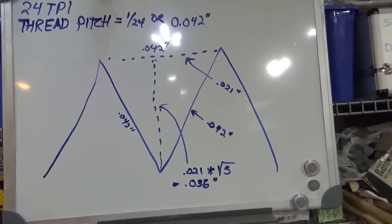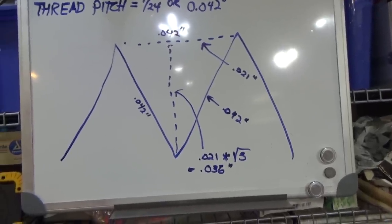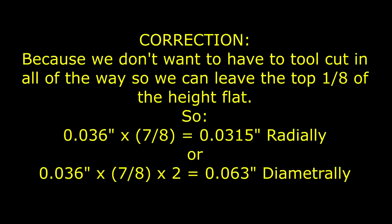To correct that last statement — we don't want to go all the way in to generate a full triangle; we want to stop leaving the top eighth flat. So we take that 0.036 height and multiply by 7/8, giving us 0.0315 inches penetration radially. Multiplied by two, that's 0.063 inches of total penetration diametrally — if using a DRO like I do — for the tool to penetrate into the work to give a proper thread.